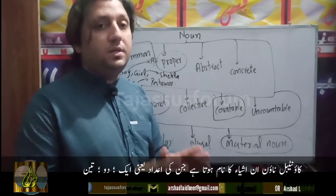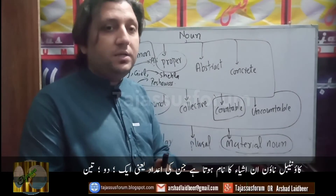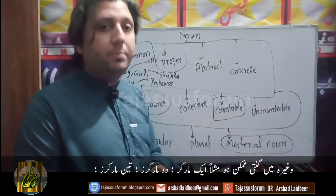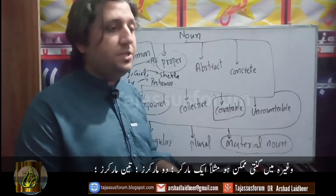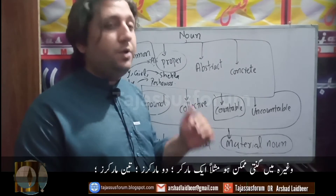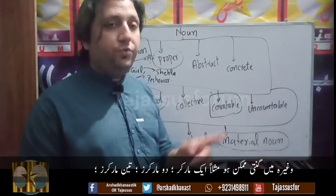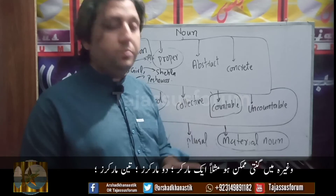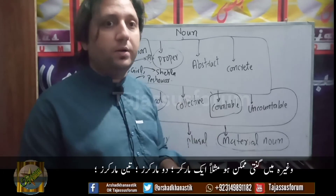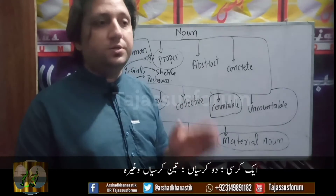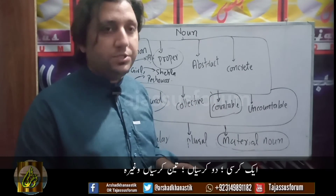Countable noun is the noun of things that you can count in numbers — in one, two, three. For example: one marker, two markers, three markers; one chair, two chairs, three chairs, etc.